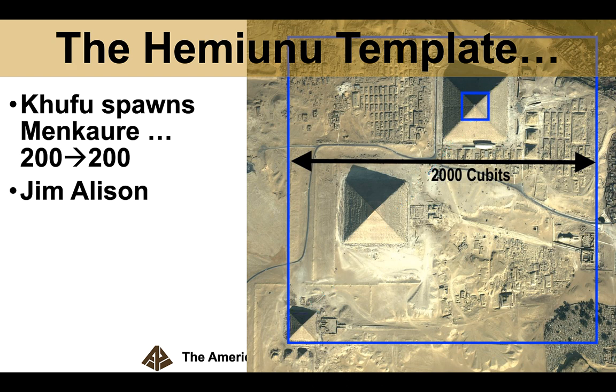Jim Alison shows the width of the Giza Plateau from the eastern side of the two temples, the Sphinx Temple and the Khafre Temple, that's the east side of the Giza Plateau. And then if we take Menkaure's west side to be the west side, that's 2,000 cubits. So, Hemiunu's template is exactly one-tenth of the width of the Giza Plateau. Interesting.